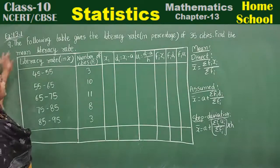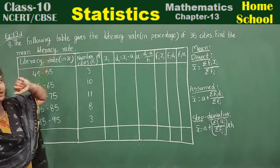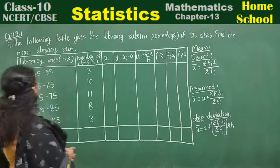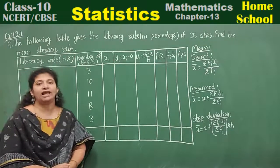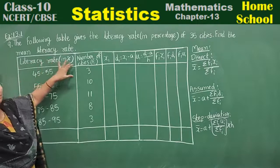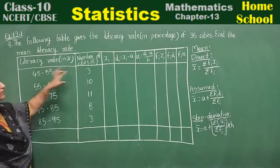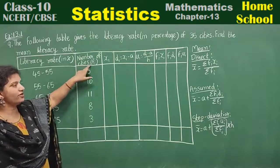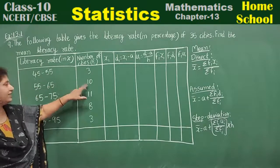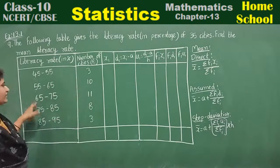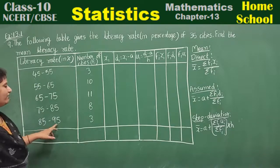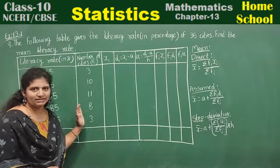The last problem in this exercise is problem number 9. The following table gives the literacy rate in percentage of 35 cities — find the mean literacy rate. The data given: 45 to 55, three cities; 55 to 65, ten cities; 65 to 75, eleven cities; 75 to 85, eight cities; and 85 to 95, three cities.